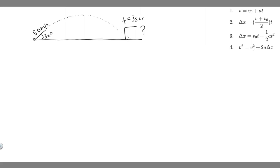In this problem, we're told a projectile is launched at ground level with an initial speed of 50 meters per second at an angle of 30 degrees above the horizontal. It strikes a target above the ground three seconds later. What are the x and y distances from where the projectile was launched to where it lands?